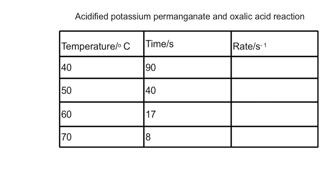So if you were to be calculating the rates for these times just doing 1 divided by time for the whole column you would end up having 0.011, 0.025, 0.059 and 0.120.